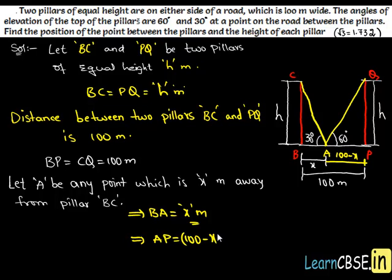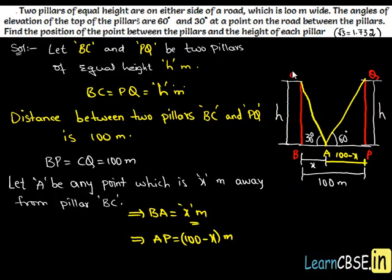We need to find the height of each pillar and the distance of the point from each pillar. We have two unknowns, H and X. To find these, we have two right-angled triangles — triangle CAB and triangle QAP. By applying appropriate trigonometric ratios, we can find H and X.